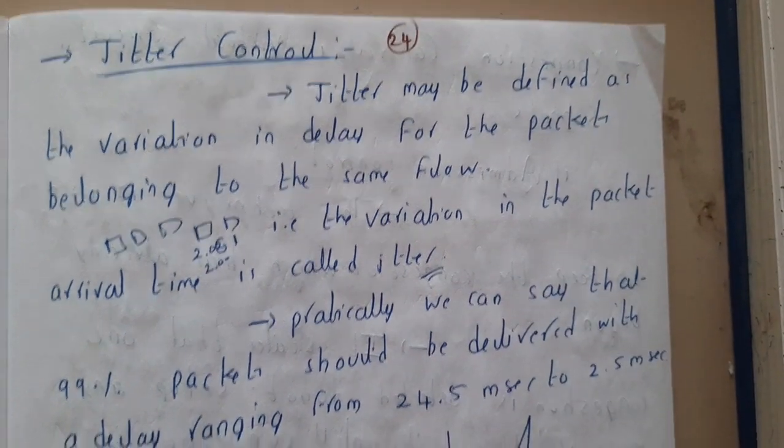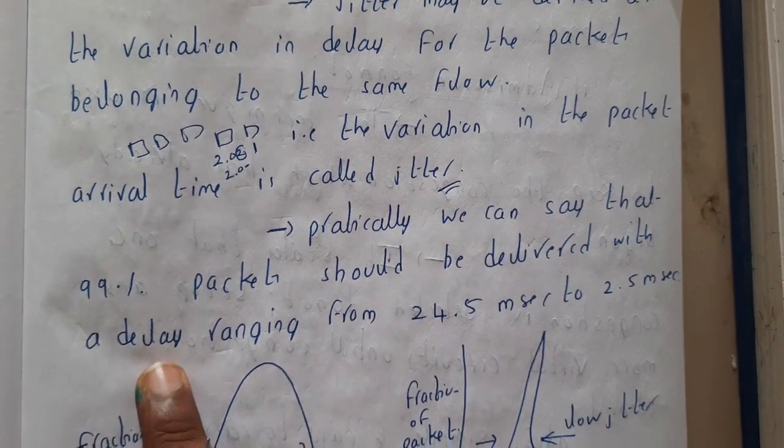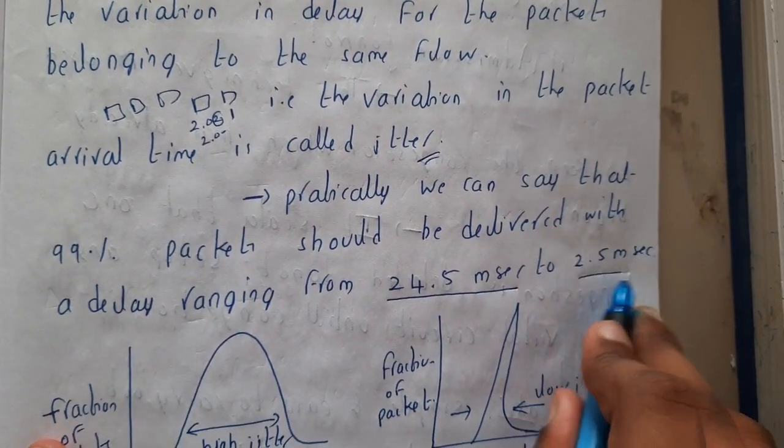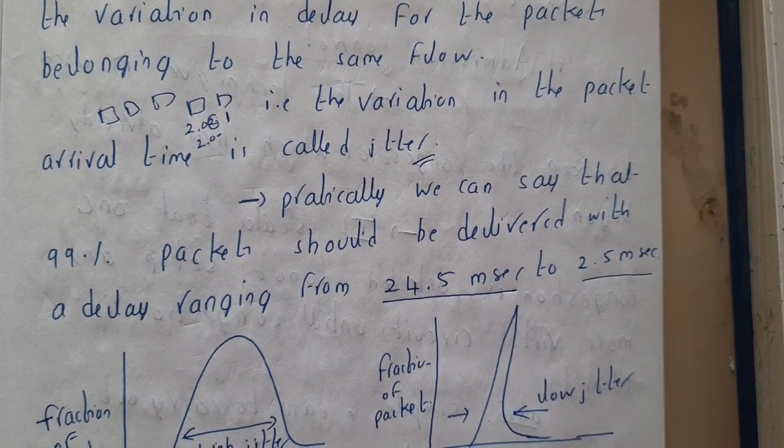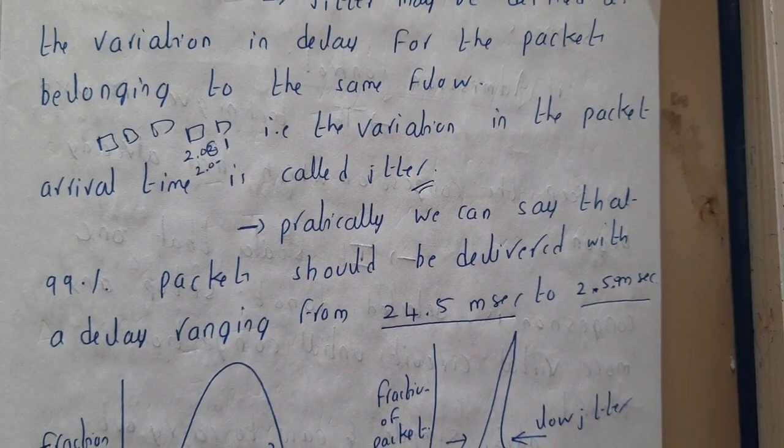Practically, we can say that 99% of packets should be delivered within a delay range of 24.5 milliseconds to 25.0 milliseconds. So in between that range only it should be there.